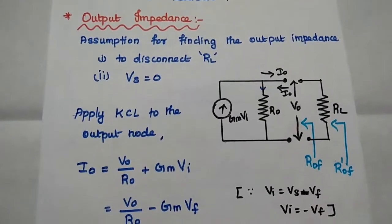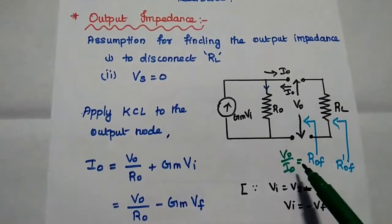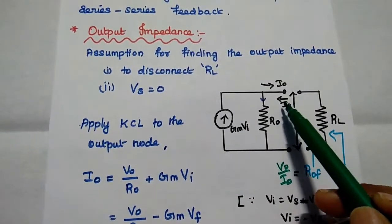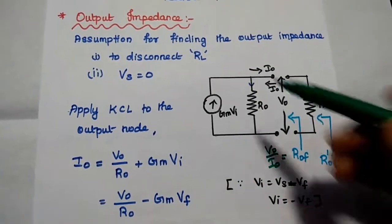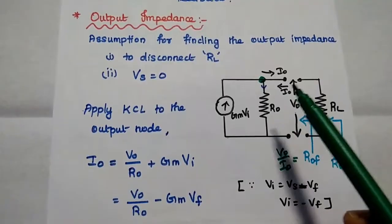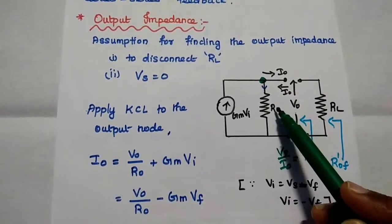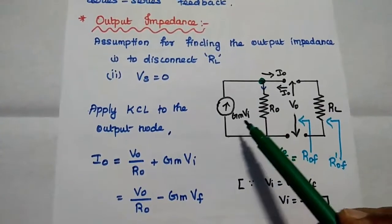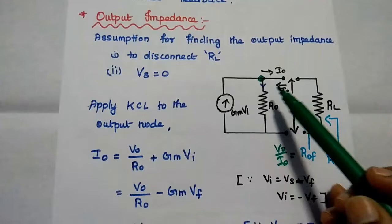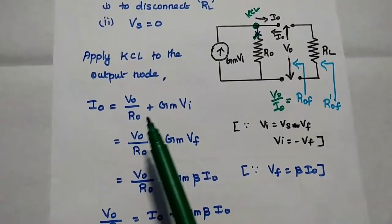Then we include RL in parallel with ROF to get ROF dash. Next, we find the output impedance ROF which is nothing but VO by IO. Looking into the output impedance from this direction, we take the feedback current signal IO, and apply KCL to this output node. The output current IO is equal to VO by RO plus Gm VI. As the source voltage is equal to zero, the input voltage VI is equal to minus VF.